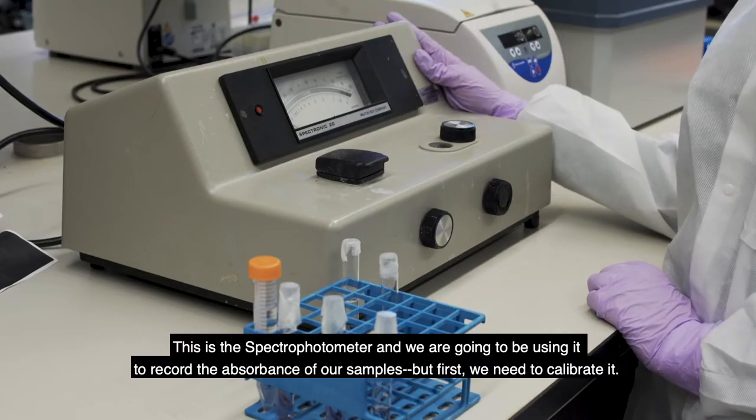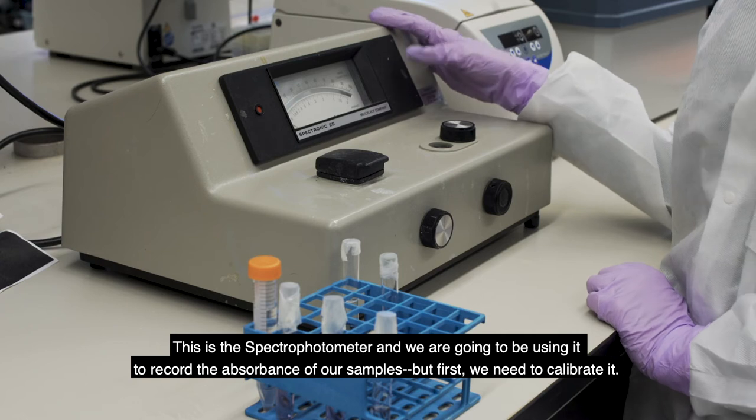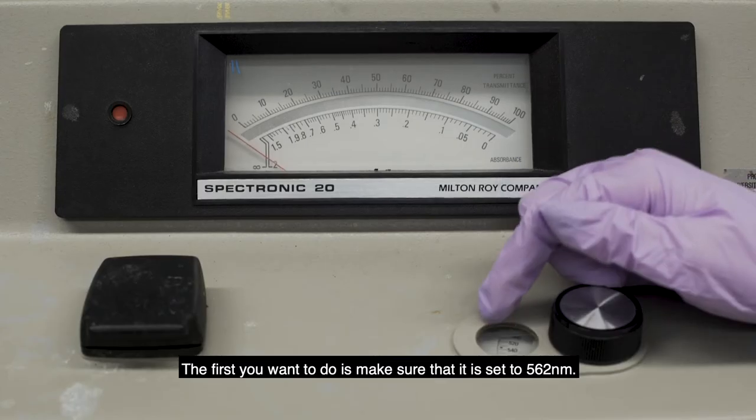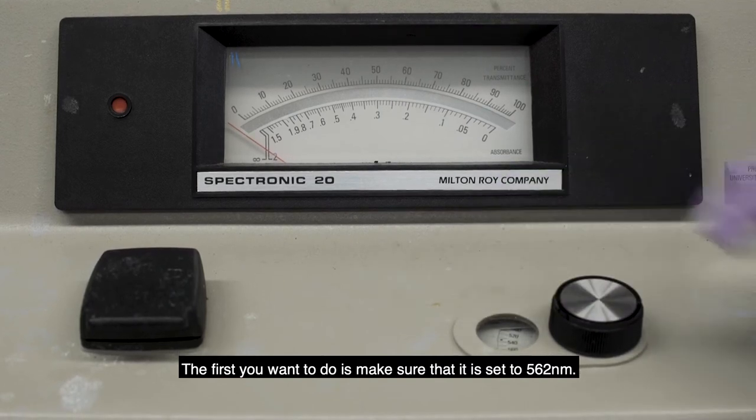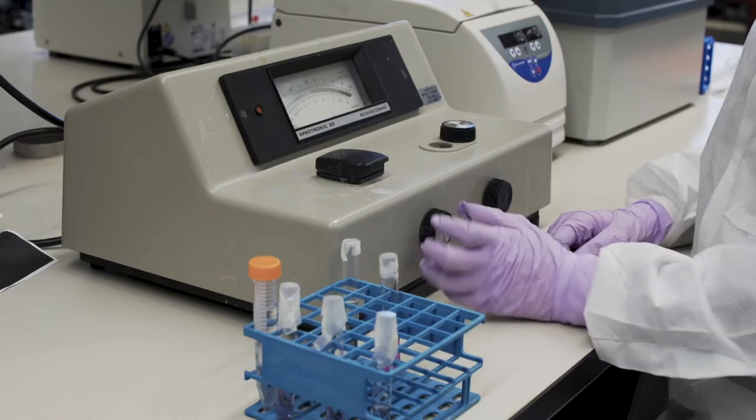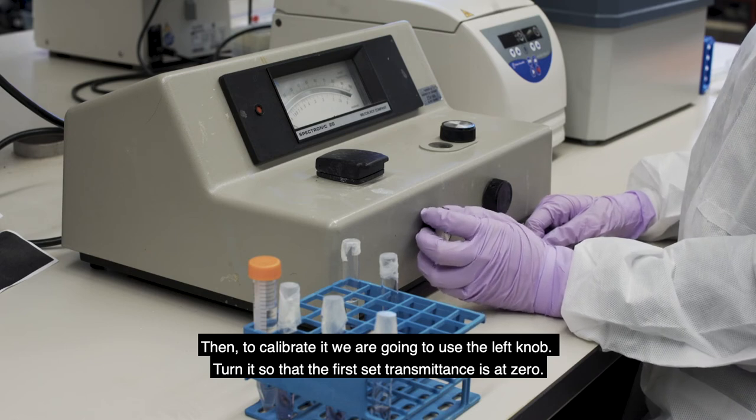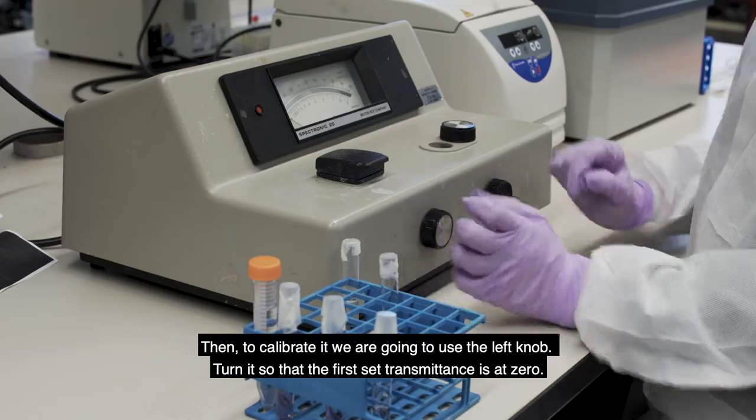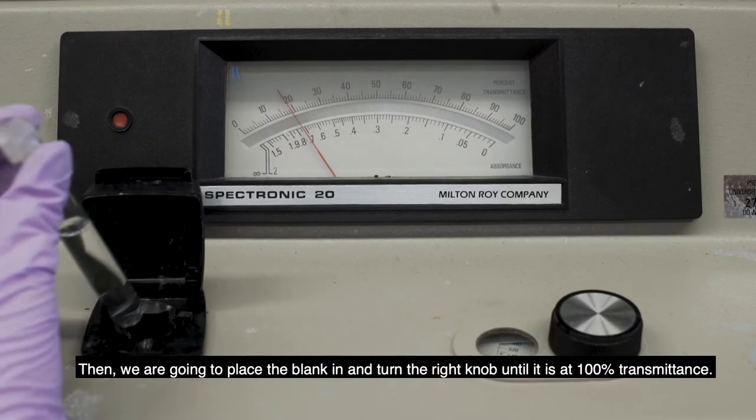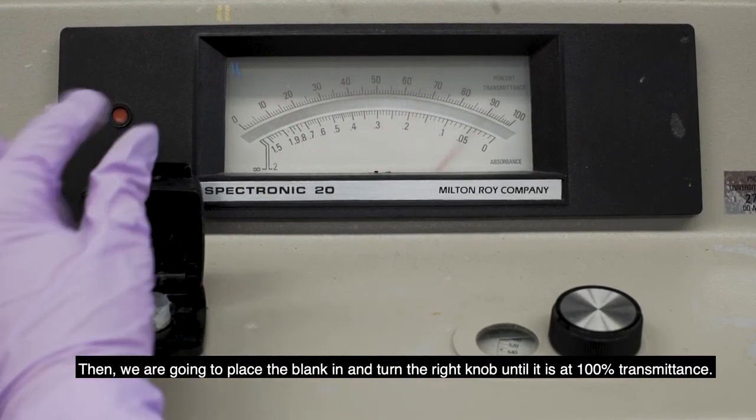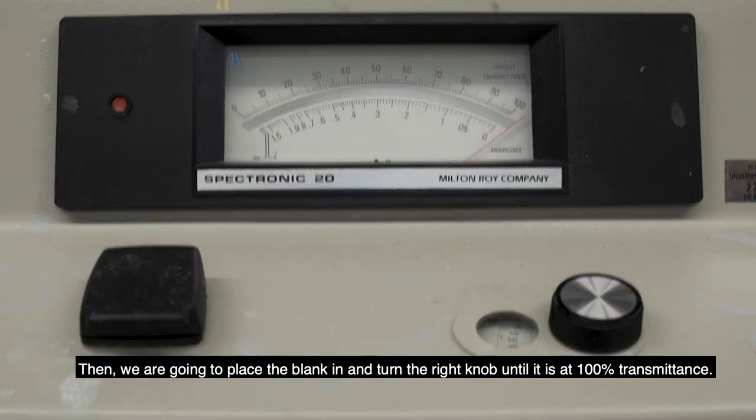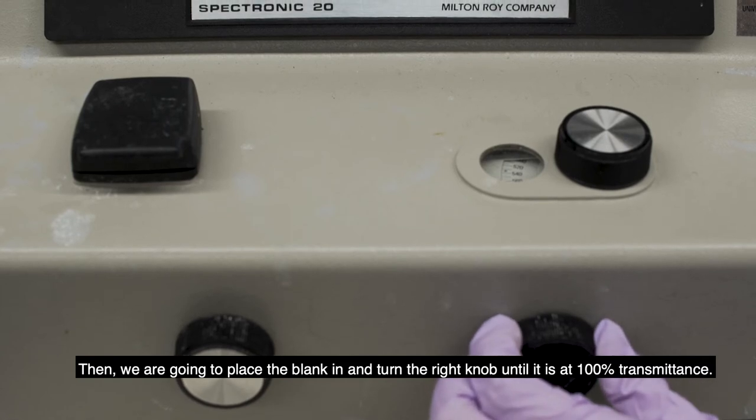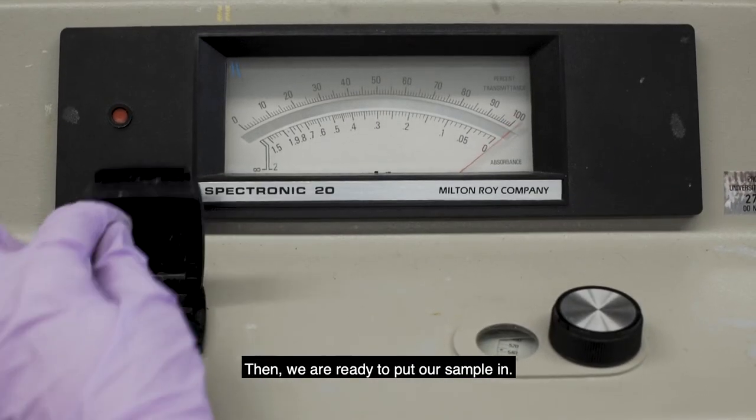So this is the spectrophotometer and we're going to be using it to record the absorbance of our samples, but first we need to calibrate it. So the first thing you want to do is make sure that it's set to 562 nanometers. And then to calibrate it, we're going to use the left knob and then turn that so that the percent transmittance is at zero. Then we're going to place the blank in and then we're going to turn the right knob until it's at 100% transmittance and then we're ready to put our sample in.